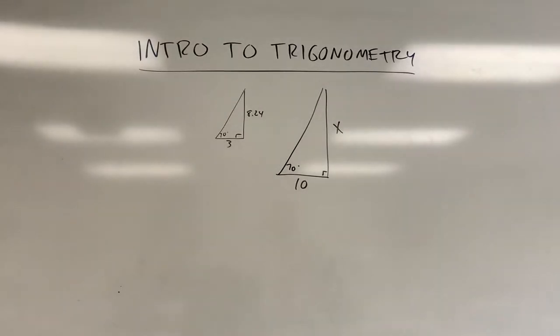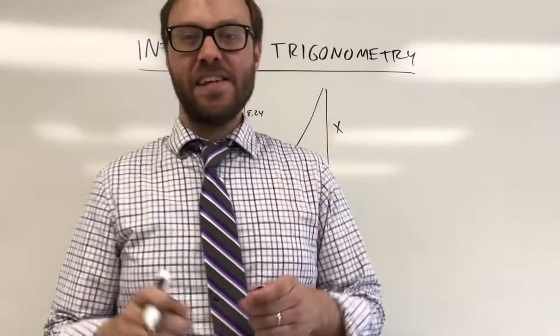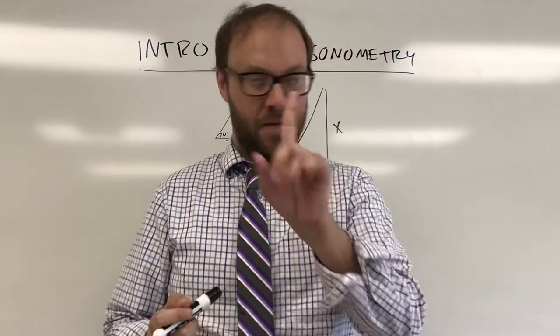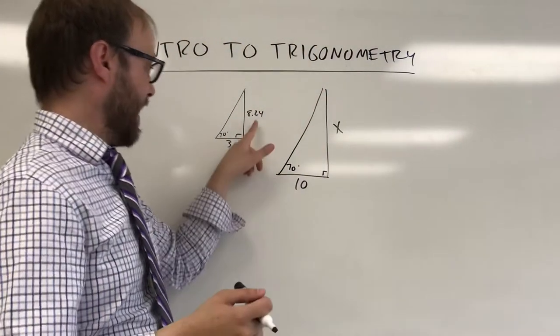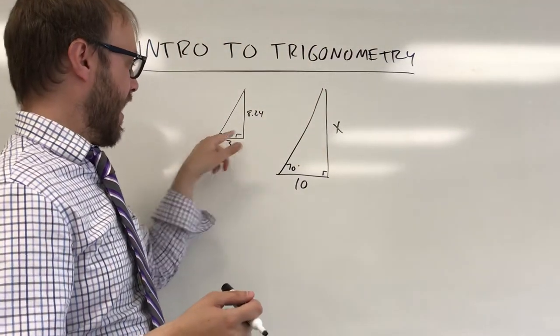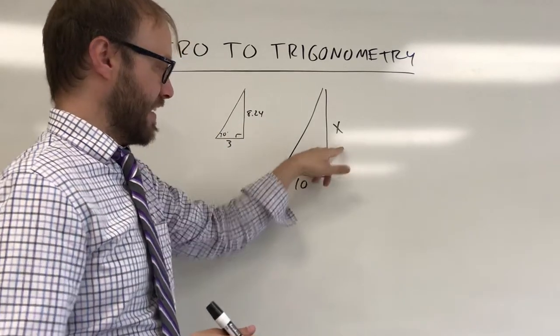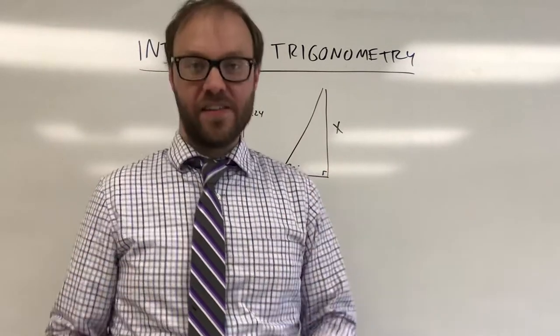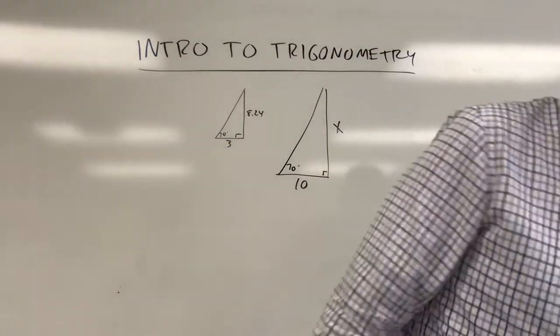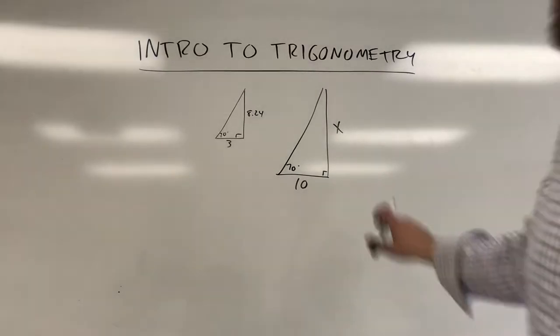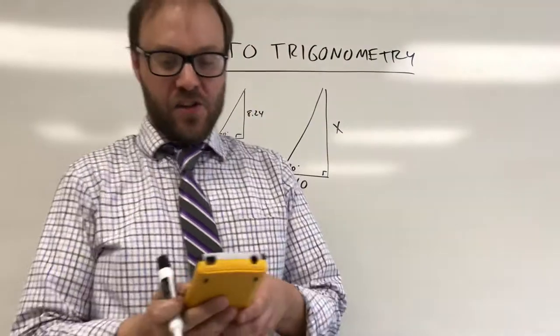And so the big idea here is that if I know these two sides of a 20, 70, 90 triangle, it should be similar to this. I should be able to use various different relationships to figure out the height of this other triangle.